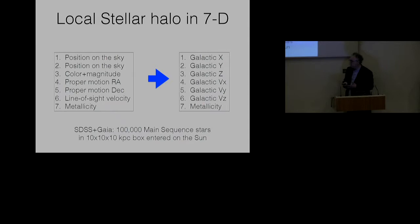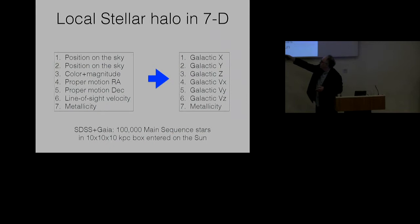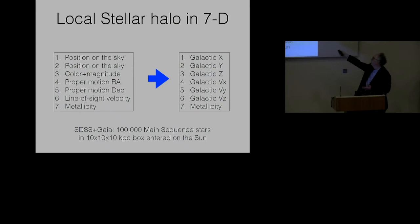Let's take some data. We're going to cross-match Gaia with the SDSS spectroscopic survey, so that I can not merely have proper motions but also line-of-sight velocities, and therefore I have complete phase space information. In particular, this is the data: position on the sky, color and magnitude, proper motion in RA and DEC from the Gaia satellite, line-of-sight velocity and metallicity from Sloan, and I can convert that to a galactic XYZ, a galactic V_X, V_Y, and V_Z, and a metallicity, and I can look at main-sequence stars centered on the Sun.